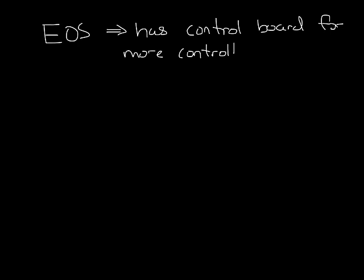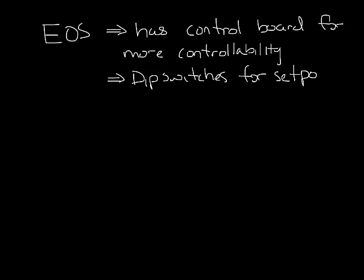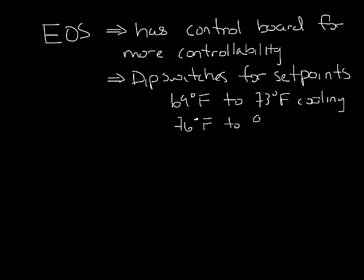Titus also makes an auto changeover slot diffuser that has more controllability called the EOS. The EOS has a small control board that allows you to use dip switches to set the heating and cooling set points. The set points can be set anywhere between 69 and 73 degrees for cooling and 76 to 80 degrees for heating.